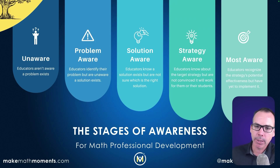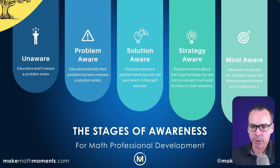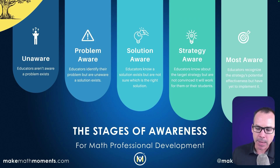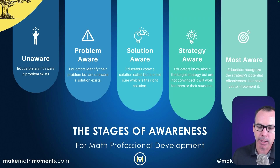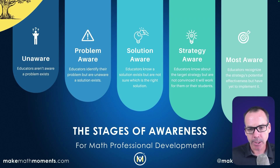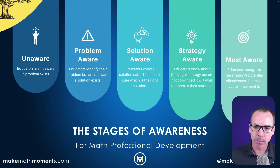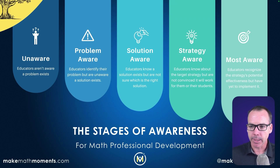We want to think about where teachers are on these five stages. Are they at the unaware stage, not seeing the problem you're trying to solve? Help them identify those problems. A lot of times you have to help them identify their problem, then make the connection that the solution you want to provide in the solution aware stage actually solves the problem they have. We have to learn about the pebbles our teachers are experiencing, and then make those connections. So the five stages: unaware — educators aren't aware a problem exists; problem aware — educators identify that they have a problem but are unaware what the solution is; solution aware — they know a problem exists and know solutions are out there, but aren't sure which one is right.